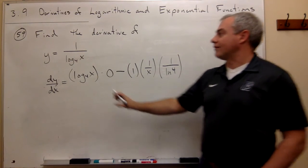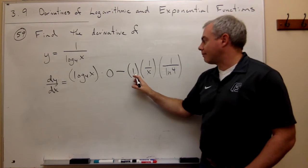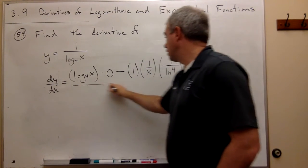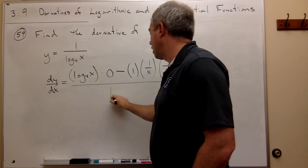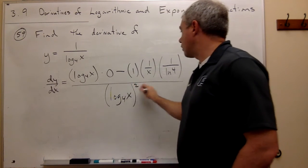So I have the bottom times the derivative of the top minus the top times the derivative of the bottom, over the bottom, log base 4 of x, quantity squared.